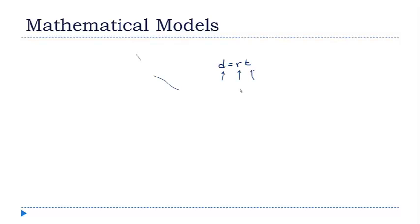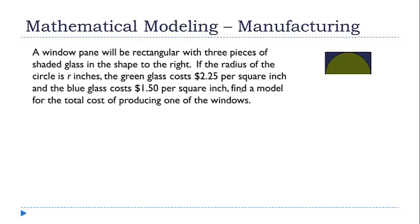So what we're going to do throughout this lecture is we're going to look at several different real-world situations and we're going to come up with mathematical models, mathematical functions, that describe those situations. So in the first one here, we have an example from manufacturing where we're trying to build a window pane with this shape on the right here. It's rectangular and it has a semicircle inside of it, and the glass for the two colors have different costs. And I want to come up with a model or a function that describes the total cost of producing one of these windows.